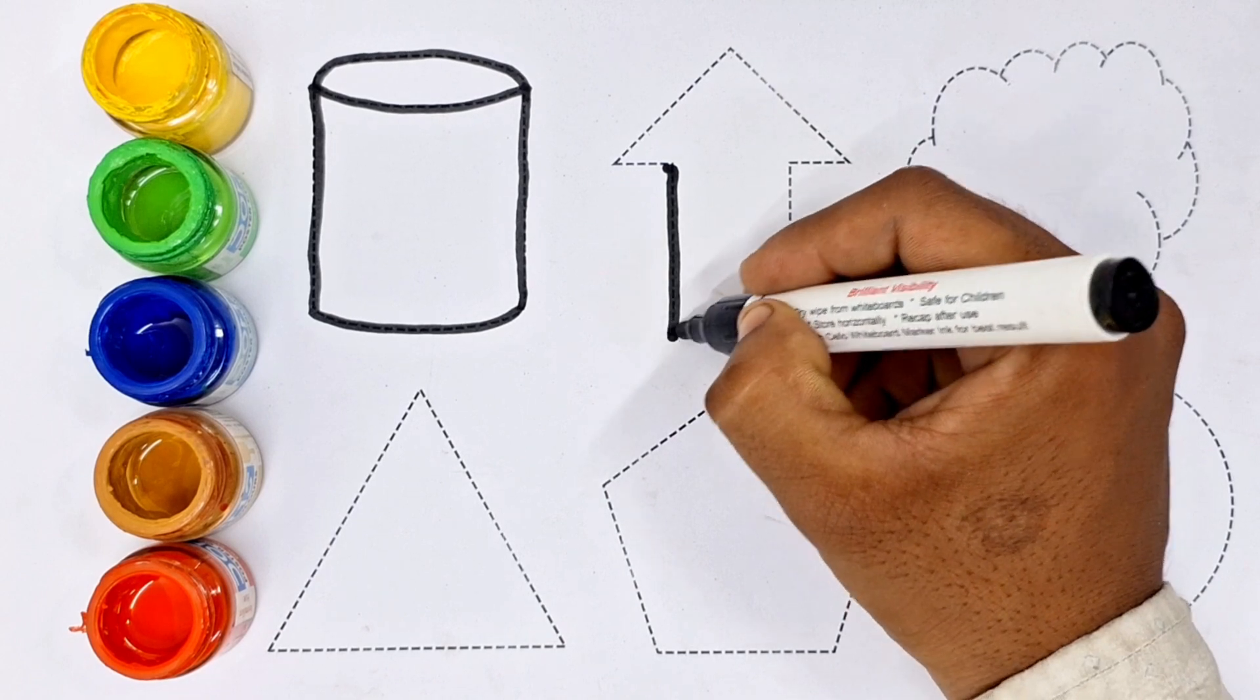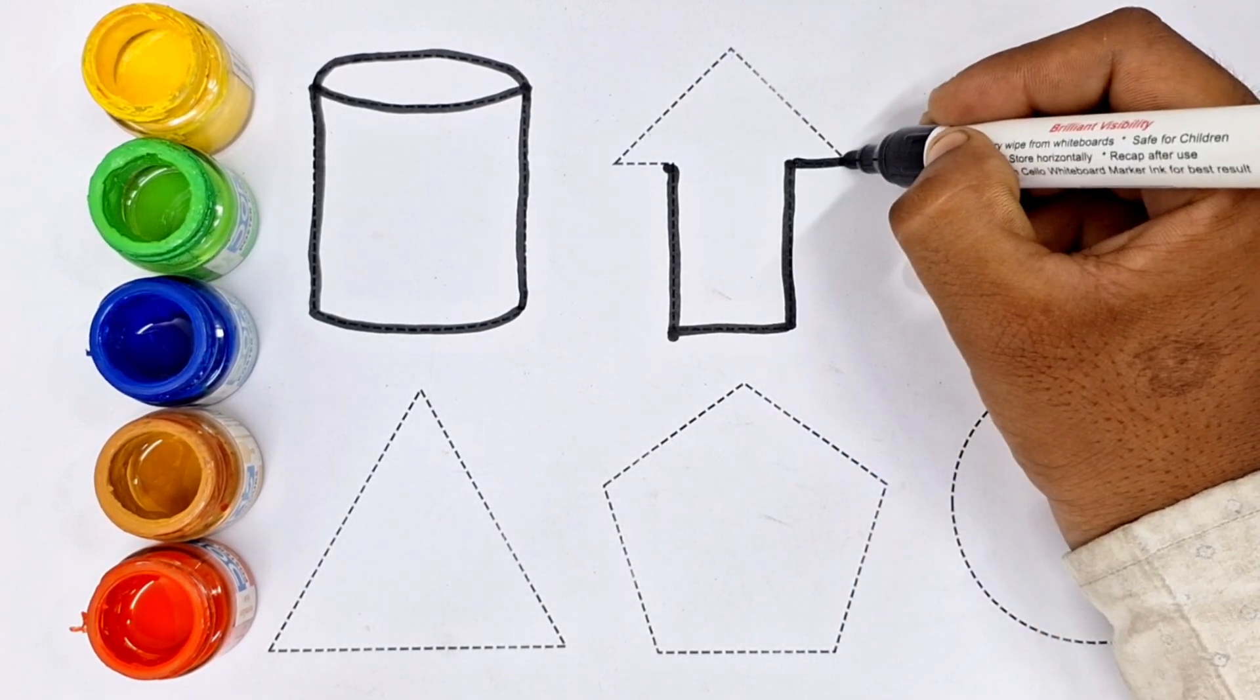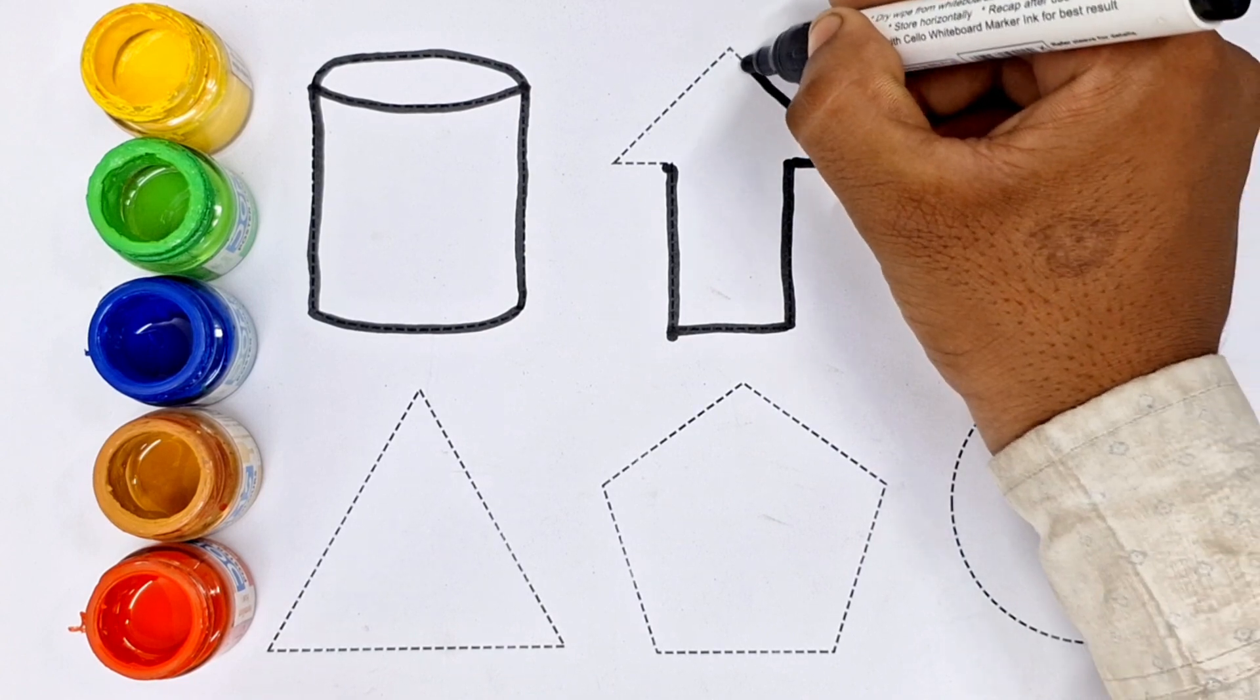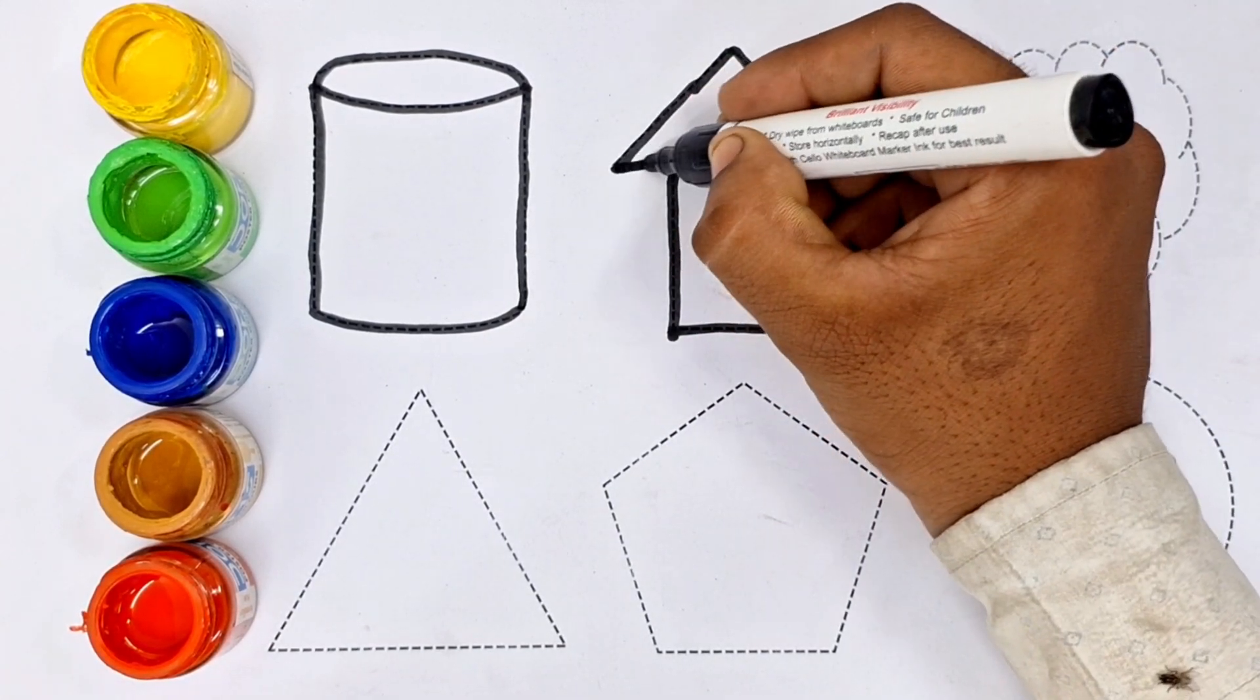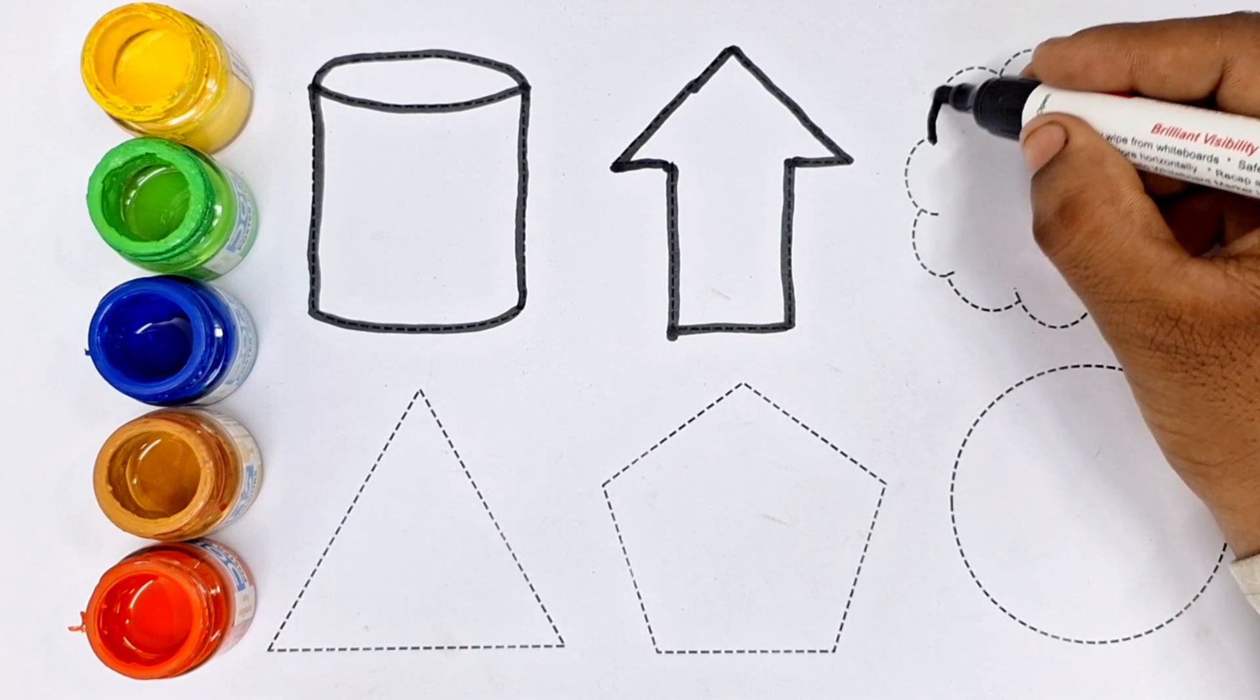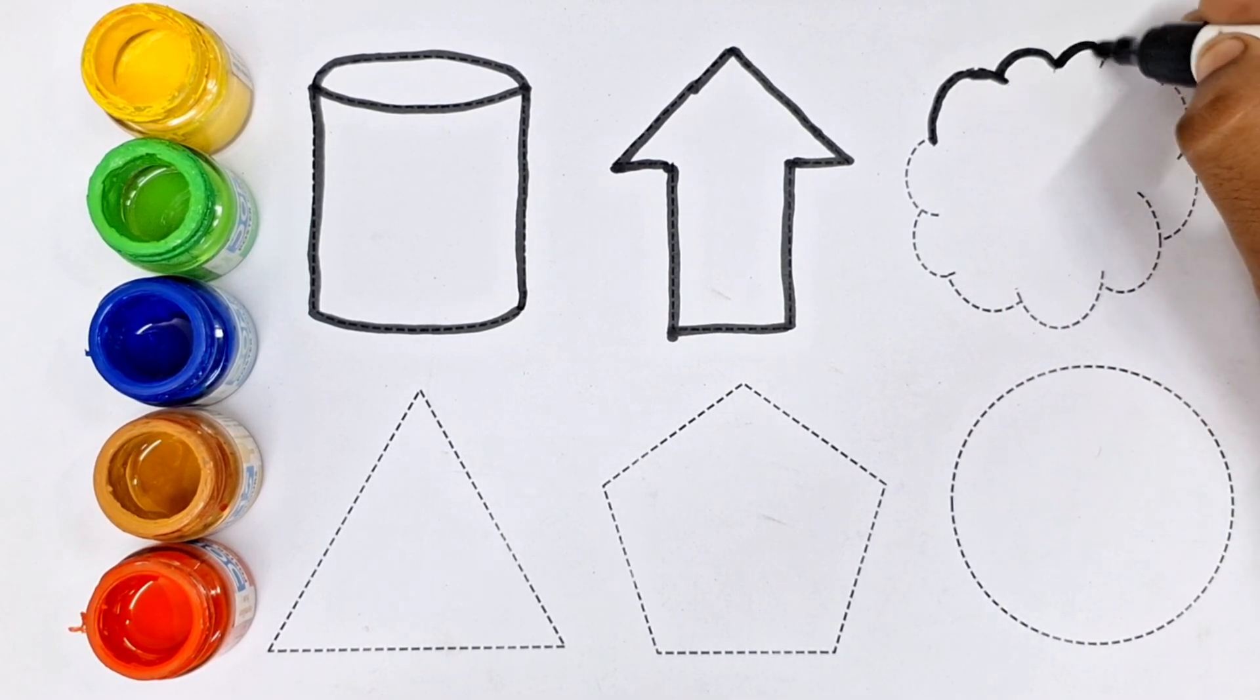This shape, what do you think? Which shape is this? The shape of the arrow. This shape is the shape of the arrow.